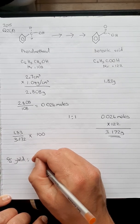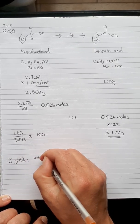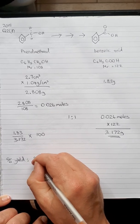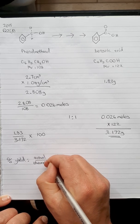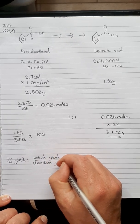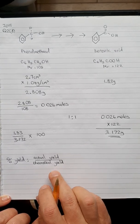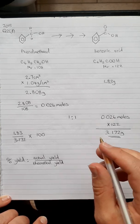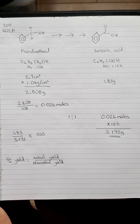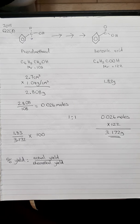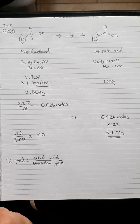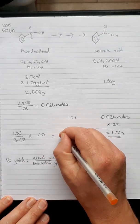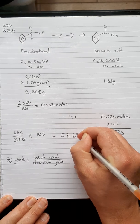We need to put the actual yield over the theoretical yield. The theoretical yield will always be higher, so the percentage will always be less than 100. So 1.83 divided by 3.172 and multiply by 100, and we get 57.69%.